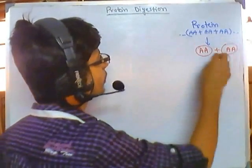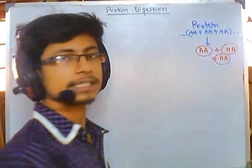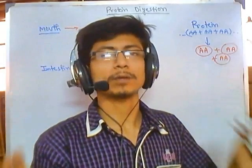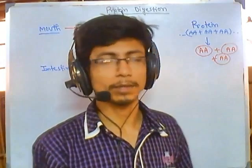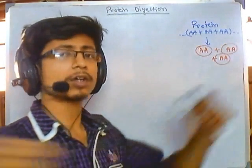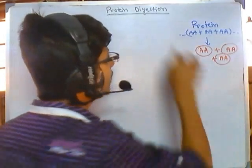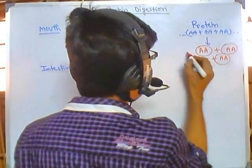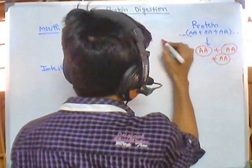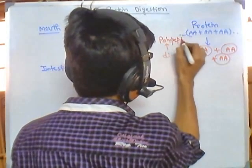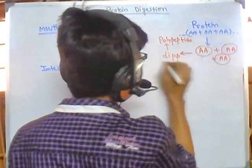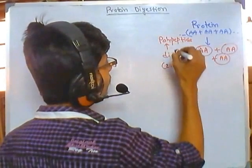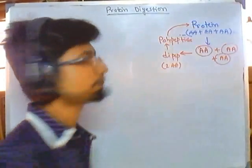Once we get these units of amino acids by breaking down proteins, digestion is considered successful. Digestion means simplification of a complex polymer or macromolecule — just as a long carbohydrate chain is broken down into monosaccharides. The unit of protein is the amino acid. When many amino acids arrange together, they first form a dipeptide — two amino acids together — then a polypeptide, and finally a protein.